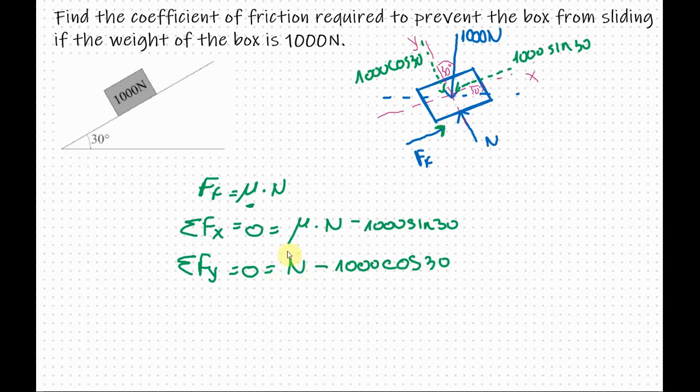Now I can easily find the value of the normal force. I will leave the normal force on one side and I will transfer this one to the other side. So N equals 1000 cosine 30. So the normal force is equal to 866 newtons.